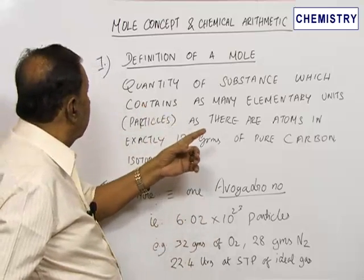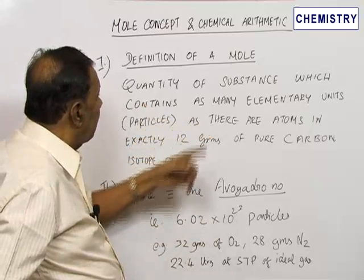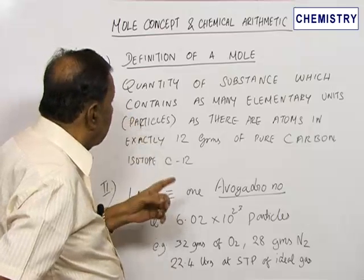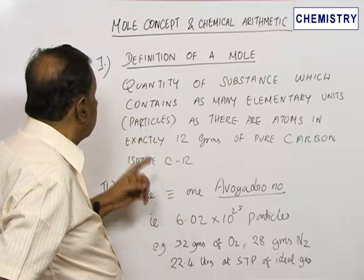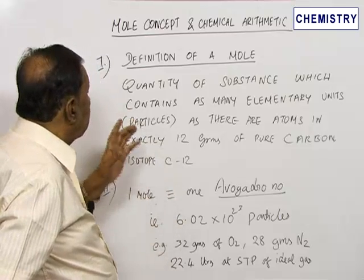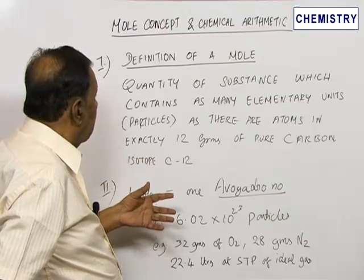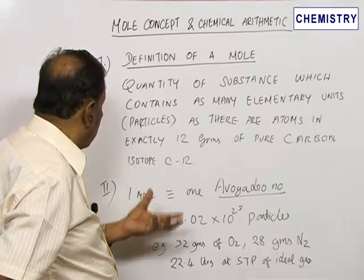As many elementary units, namely particles, as there are atoms in exactly 12 grams of pure carbon, isotope carbon-12. Now that is a mole - as many elementary units as there are in 12 grams of carbon-12.